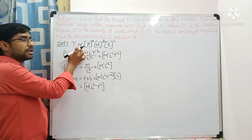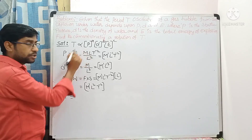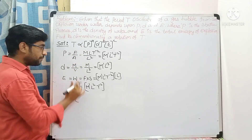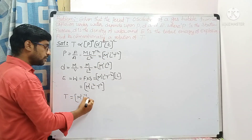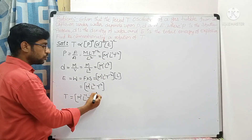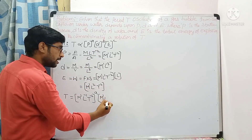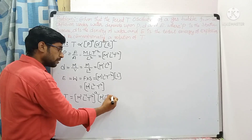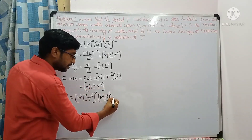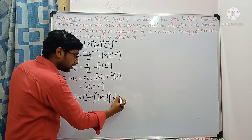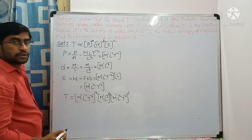Now substitute these dimensional formulas into the equation. T equals: pressure — M to the power 1, L to the power minus 1, T to the power minus 2 — to the power a; next density — M to the power 1, L to the power minus 3 — to the power b; next energy — M to the power 1, L squared, T to the power minus 2 — to the power c.